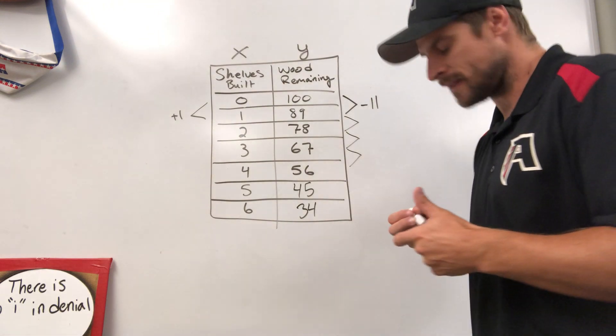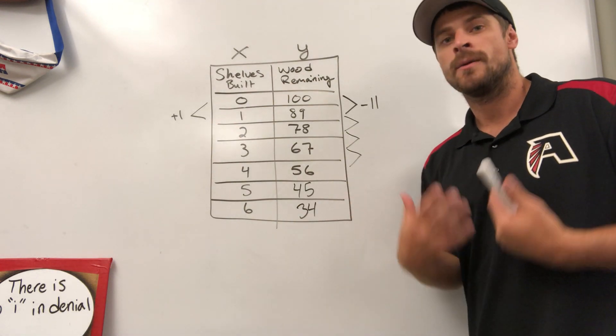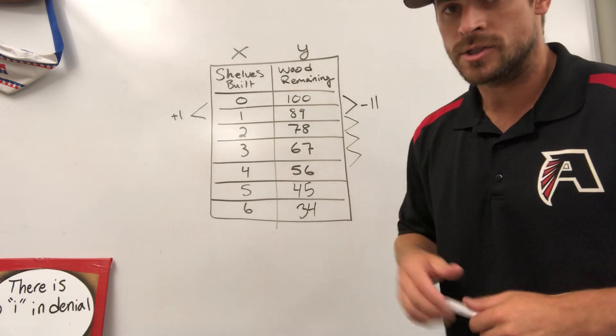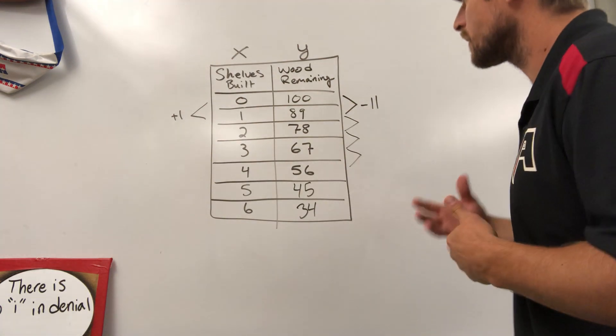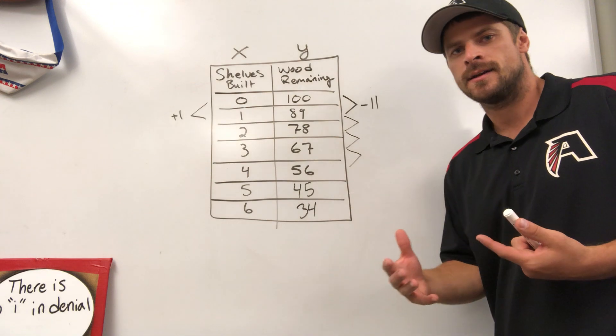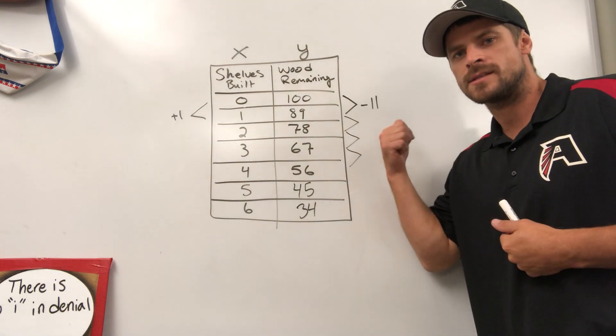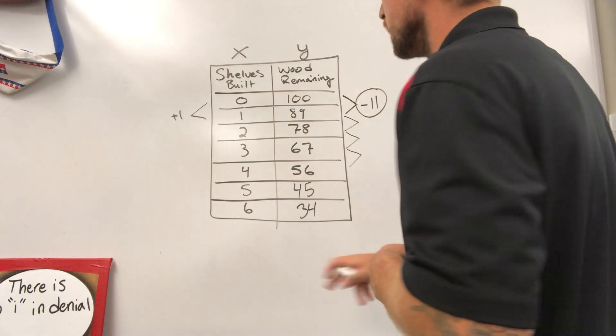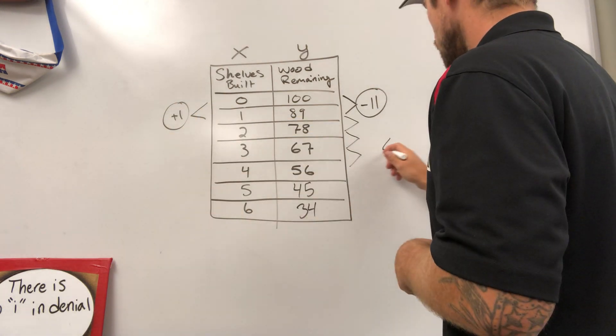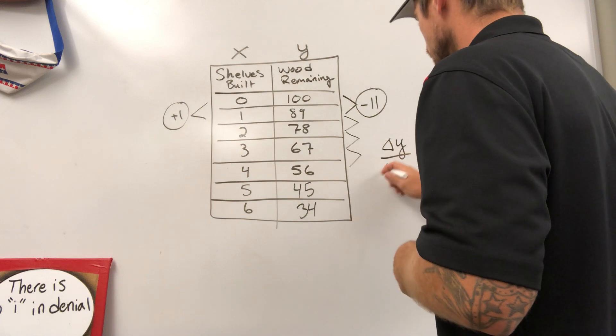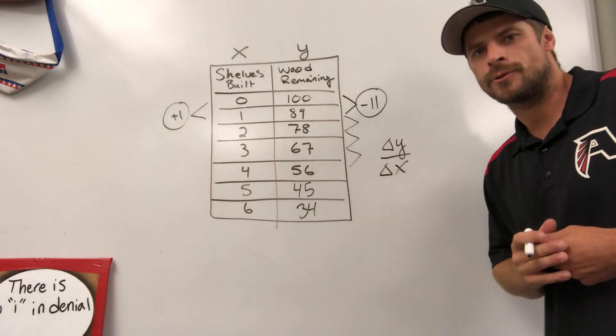So I've completed the table, but I have some questions being asked about my rate of change. In the worksheet that I gave out to my students, it asked, what is the amount of wood that it takes to build one shelf? Well, based off of what we found, it takes 11 pieces of wood for one shelf to be built. Change in Y over change in X is how we get our rate of change.